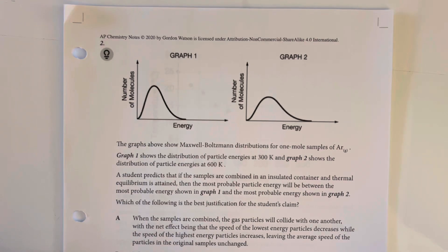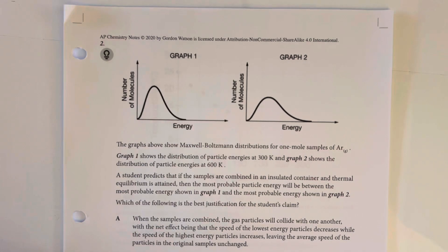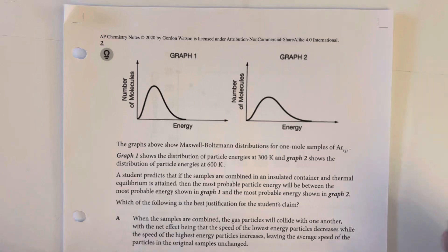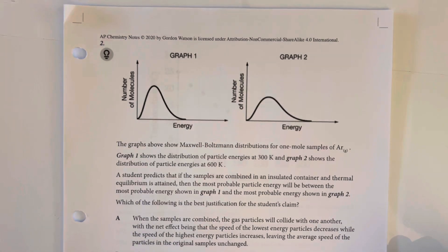A student predicts that if the samples are combined in an insulated container and thermal equilibrium is obtained, then the most probable particle energy will be between the most probable energy of graph 1 and the most probable energy of graph 2. Which of the following is the best justification for the student's claim?